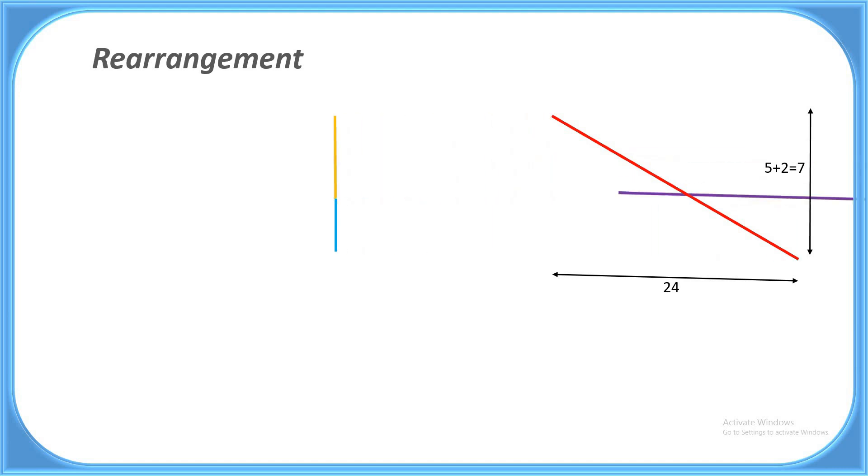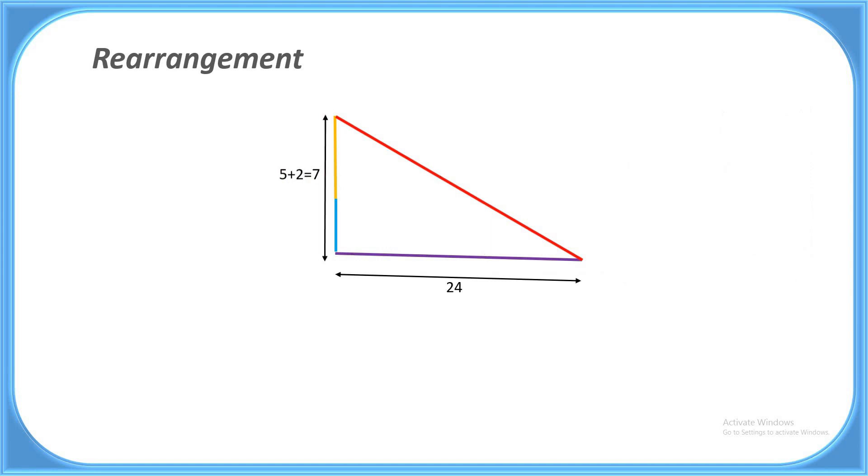Now Baudhāyana theorem, or you can call Pythagorean theorem: 7 squared plus 24 squared equal to length of the red line squared.